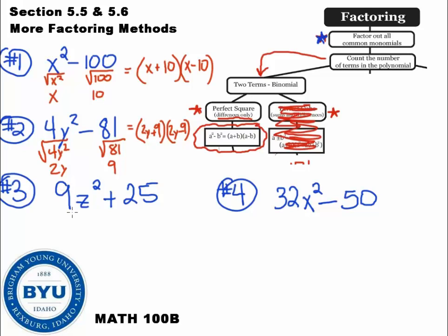So number three, any common stuff? No common stuff. I ask myself, how many terms? Two terms, perfect squares. Are these perfect squares? Square root of 9z squared is 3z. Yeah. Square root of 25. What times what gets me 25? 5. Good. However, however, we've got addition here. You cannot factor perfect squares if they are addition. You cannot do sums of squares. You can only do difference of squares. So therefore, because this is plus, we would say that this does not factor.